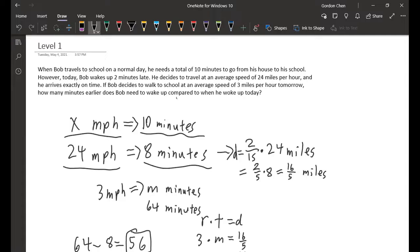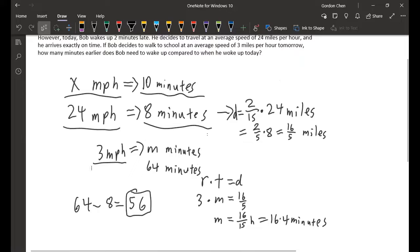We know that he's traveling at 3 miles per hour. We call the number of minutes M, the number of minutes that he takes to go to school at 3 miles per hour. We say the distance is D. We say the distance is 16 over 5, but we first put D because rate times time equals distance. And we get M is 16 over 15 hours, which is 64 minutes.